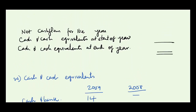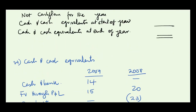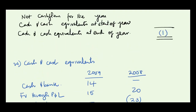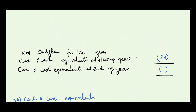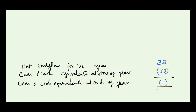At the end of the year (2009) we have negative 1; at the start of the year we have negative 33. This means that net cash flows for the year must be 32. We are trying to ensure that the sum of all three headings will give us 32.